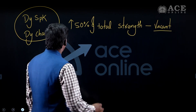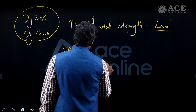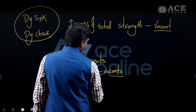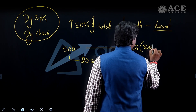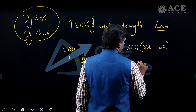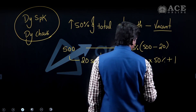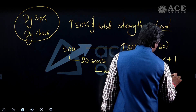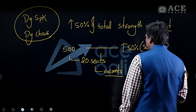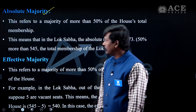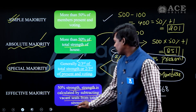Effective majority means more than 50% of the total strength of the house minus vacant seats. Suppose the total strength is 500 and 20 seats are vacant. The formula is: more than 50% of (500 minus 20) = 50% of 480 plus 1 = 241 members. The effective strength excludes vacant seats, not just absent members.